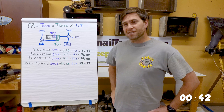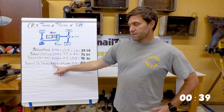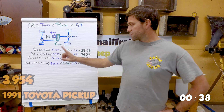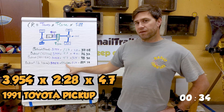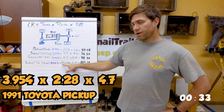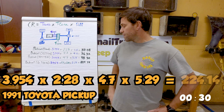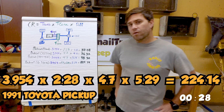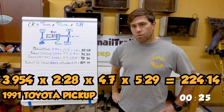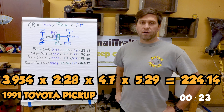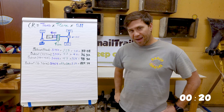If you're running dual t-cases like I am, now we're at stock first gear with — I have a 2.28 in front and 4.7 in the rear, sorry I wrote those backwards — with 5.29s for my 37-inch tires, I'm at a crawl ratio of 224.14, which is super high!